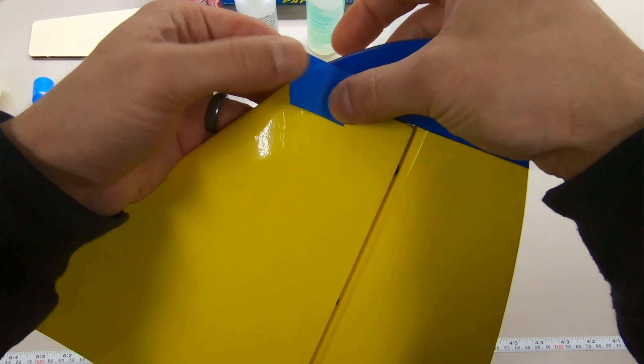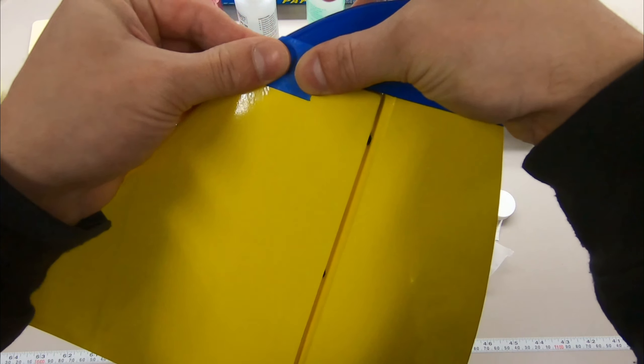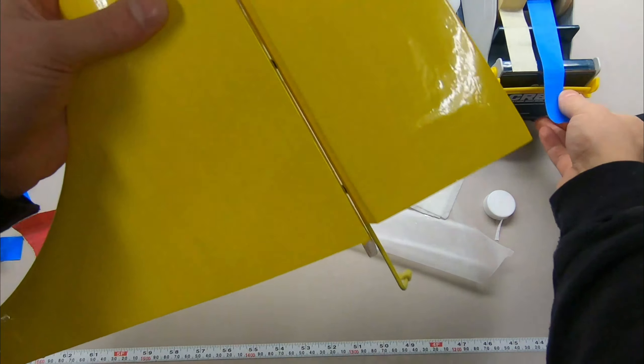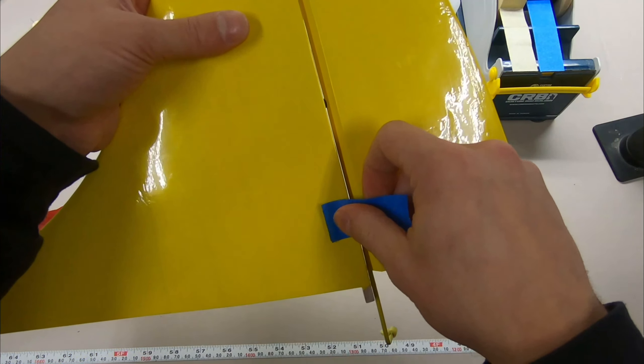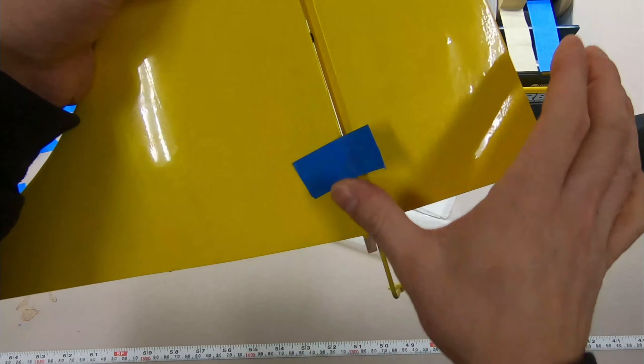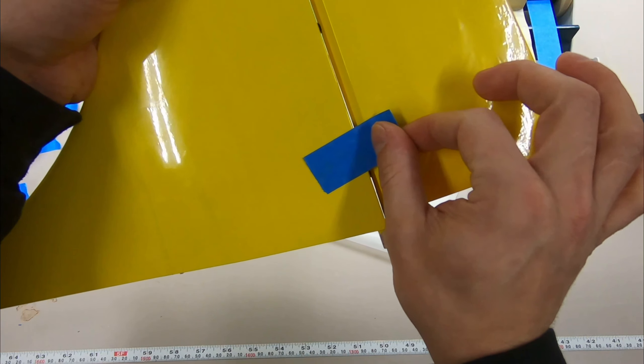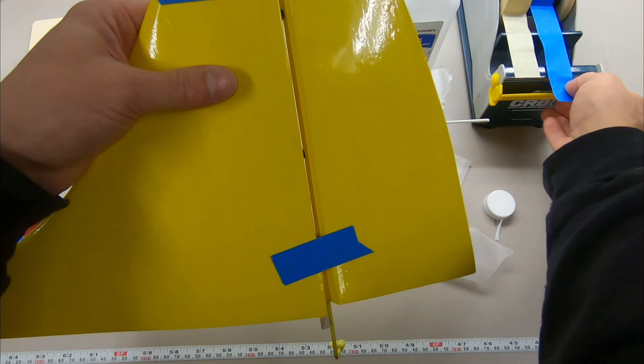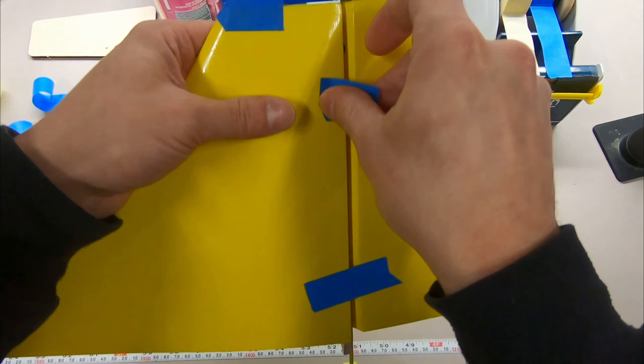On the center like that. So now this is centered. I'm going to put a piece of tape across here so that way it's not going to want to pull apart. Same thing up here.